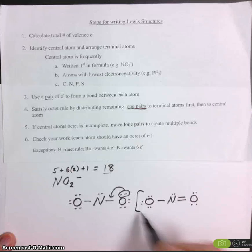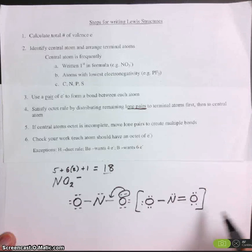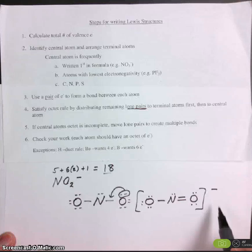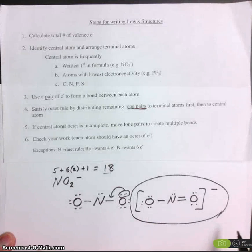Now because this is a polyatomic ion, we want to finish it by writing brackets and the charge. So this is our Lewis dot structure for NO2 minus.